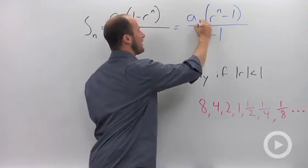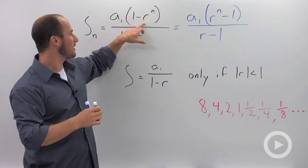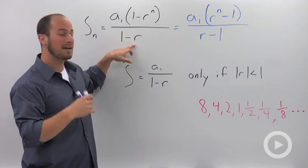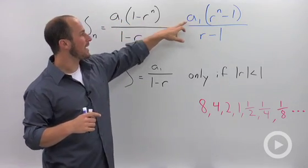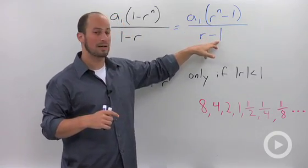So what we have is the first term times 1 minus r to the n over 1 minus r. This is the exact same thing as a sub 1, r to the n minus 1 over r minus 1.